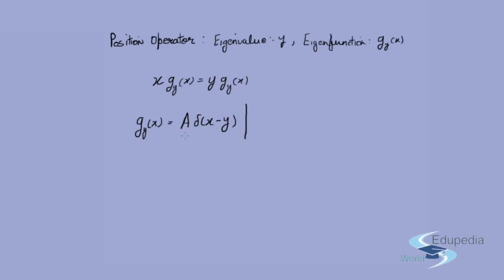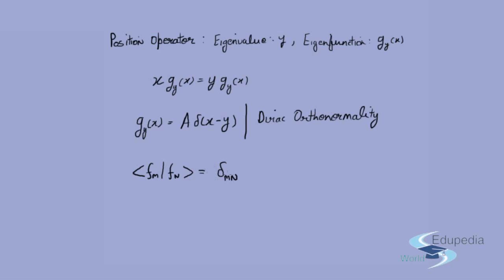In this case we do not have the ordinary type of orthonormality, but there is a separate type called Dirac orthonormality, which is an analog of orthonormality for infinite-dimensional functions. Our original definition for discrete eigenfunctions f_m and f_n was ⟨f_m | f_n⟩ = δ_mn, where δ_mn is 0 when m ≠ n and 1 when m = n.